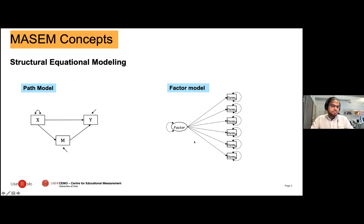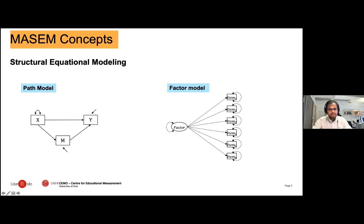For example, the latent variable in this model can be an indicator of intelligence and the observed variables can be scores in different areas of intelligence such as mathematical intelligence, verbal intelligence, and so on. In this particular model we state that the scores of individuals covary because there is a common factor — intelligence — that affects the scores in all six tests.